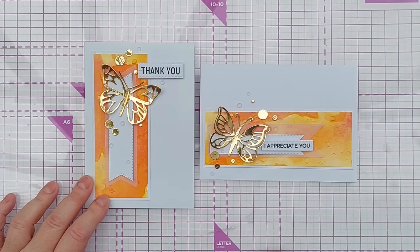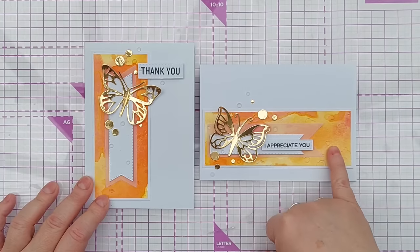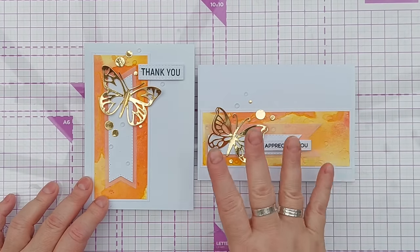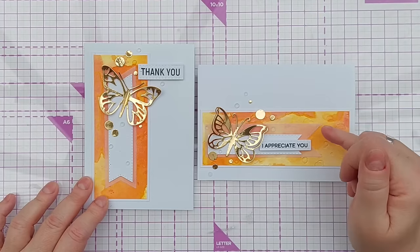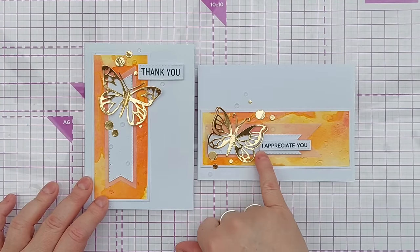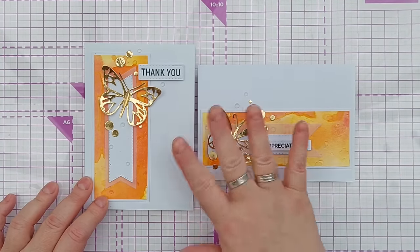And I did much the same thing here. I did actually run the other half of this through an embossing folder. So it's got a bit of texture on it and we've got a vellum banner to do some toning down, a bit more white and then a sentiment and the butterfly.